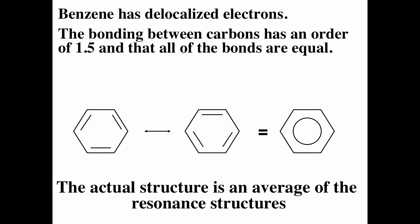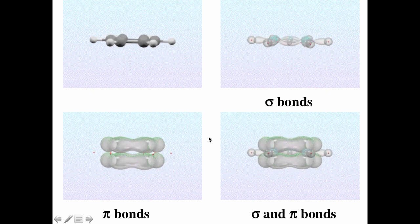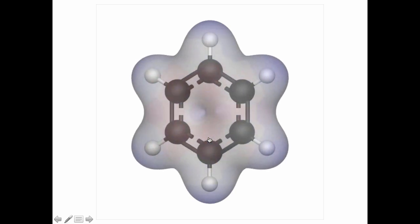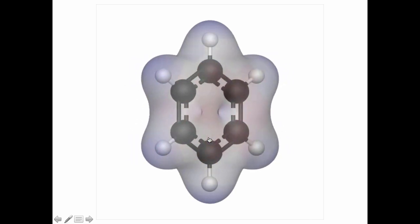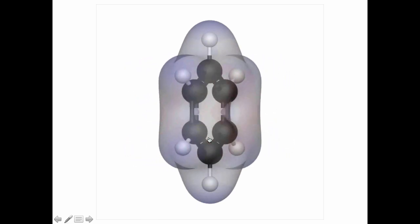Pi electrons can actually be delocalized. In benzene, there are two resonance structures, and the actual structure is an average of them. A better representation shows the sigma bonds and completely delocalized pi bonds. An electrostatic potential map of benzene shows the surface at one value of electron density, with red corresponding to partial negative charge (the pi electrons) on the face of the ring, and blue corresponding to partial positive charge on the hydrogens.